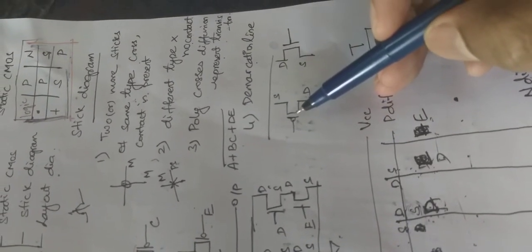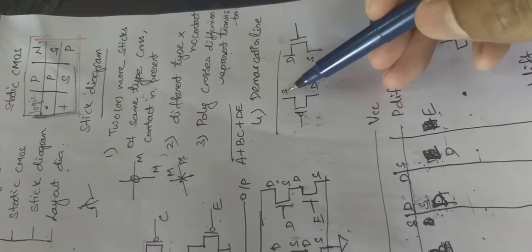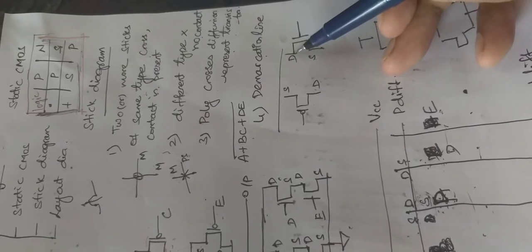After drawing the static CMOS diagram, the second step will be to mark source and drain terminals for each and every transistor in your circuit, for both PMOS and NMOS. For a PMOS transistor, the source will be at the top and the drain will be at the bottom.